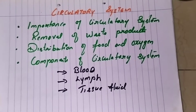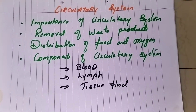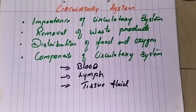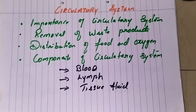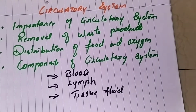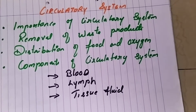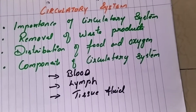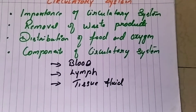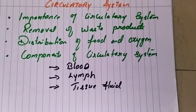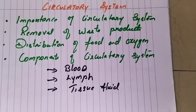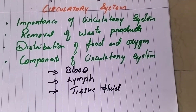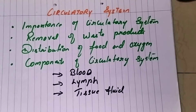All body cells need nutrients, oxygen, and energy for performing cellular activities such as metabolism. The metabolism of these nutrients releases carbon dioxide and ammonia, both of which are toxic to our body and must be removed immediately. We are going to study how this removal of waste products takes place.